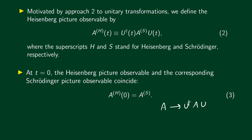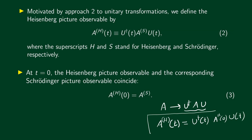In approach 2, operators change according to the relation A → U†AU under unitary transformations. This unitary transformation could be a space translation, a rotation, or time evolution. In the case of time evolution, this gives us the Heisenberg picture. Let's denote the operators in the Heisenberg picture with the superscript H. In the Heisenberg picture, the operator at time t is related to the operator at time 0 by A^H(t) = U†(t) A^H(0) U(t).